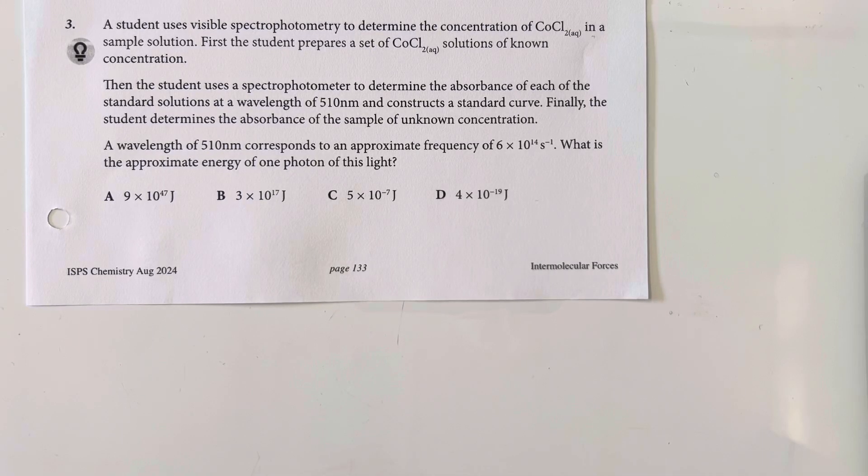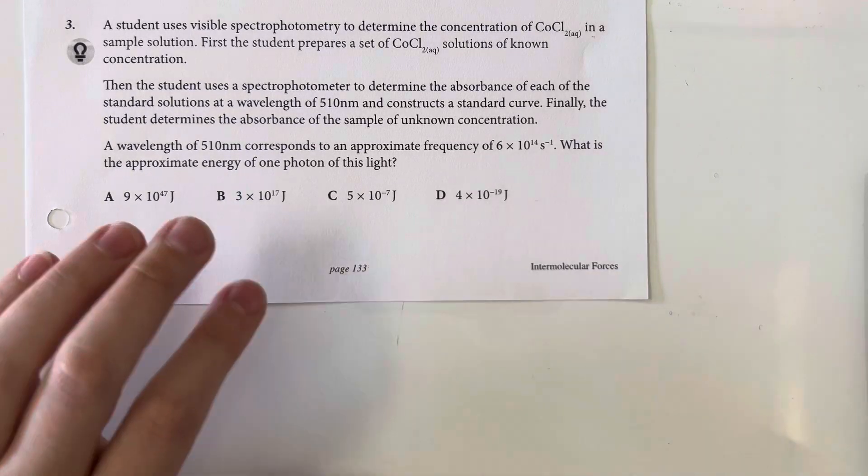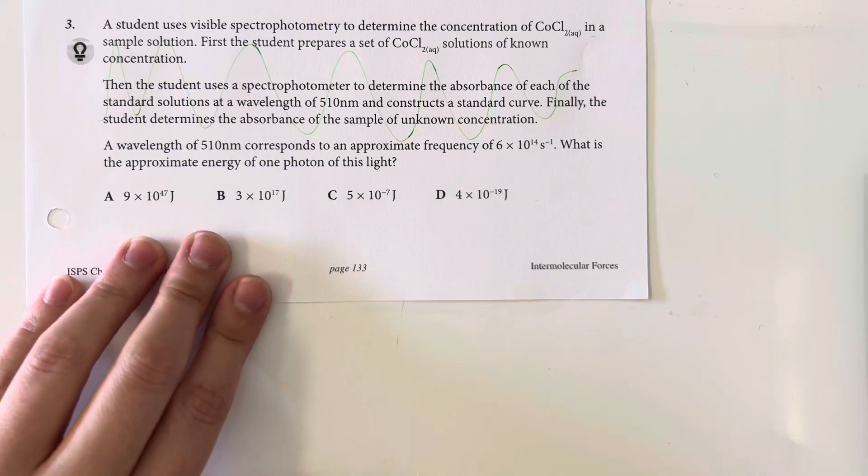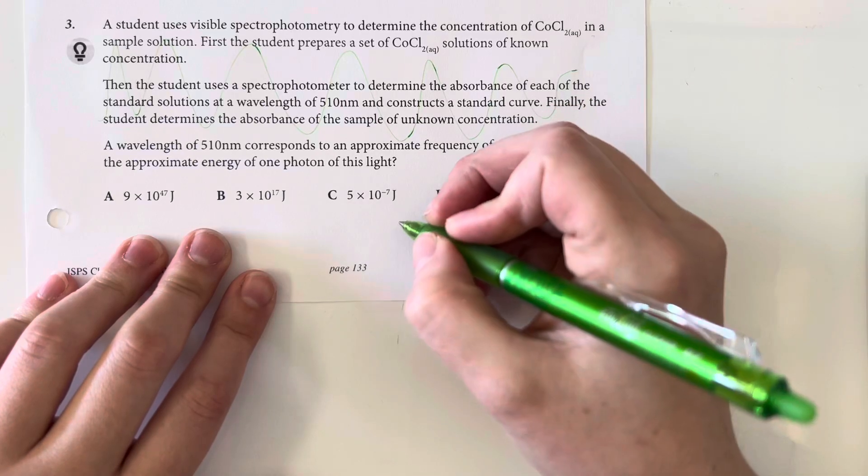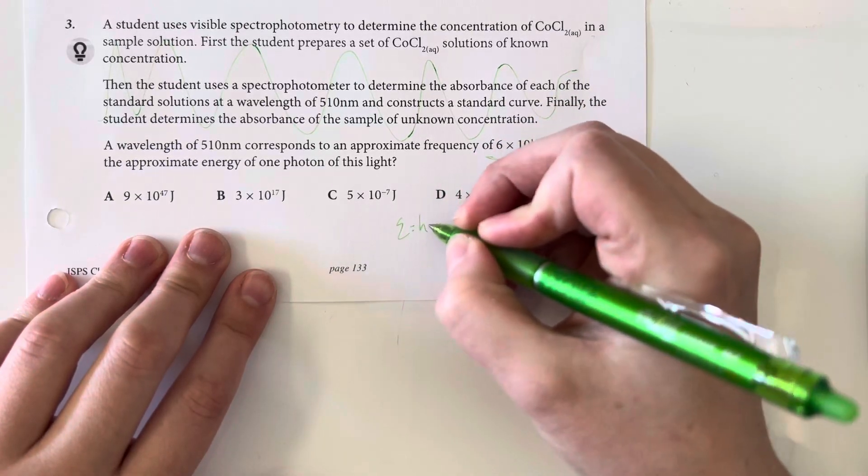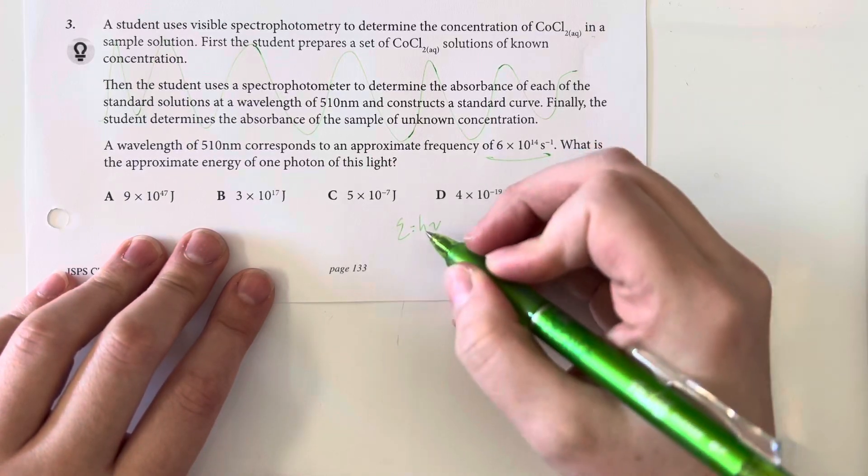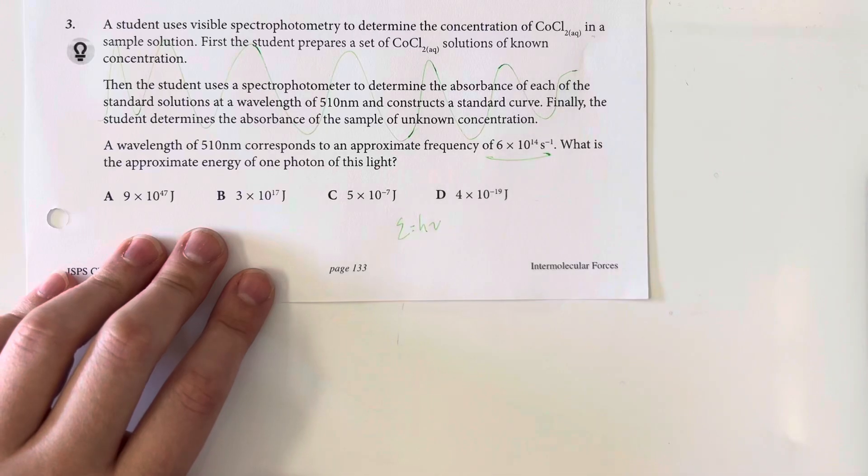A wavelength of 510 nanometers corresponds to approximately a frequency of 6 times 10 to the 14th hertz. What is the appropriate energy of one photon of this light? So I don't need any of this information from the top of the question. I just need to convert the frequency to energy. Energy is equal to Planck's constant multiplied by frequency. I want to know what the energy is. I don't need to rearrange. So I can just go ahead and plug that in.